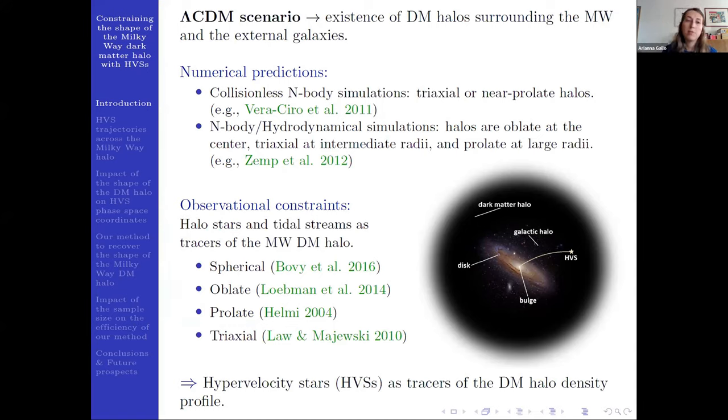However, from observational constraints with halo stars and tidal streams as tracers, we didn't find univocal results for our Milky Way. So in our work, we will use hypervelocity stars as tracers of the dark matter halo density profile.